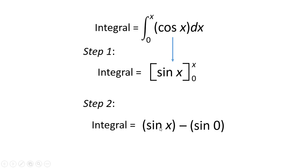Now, if we evaluate this at sin x, we just leave the x in, and then if we need to evaluate it at sin 0, sin 0 is just 0. So overall, the integral for cos x between 0 and x is sin x.